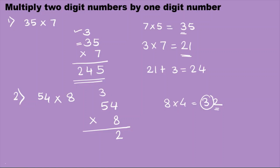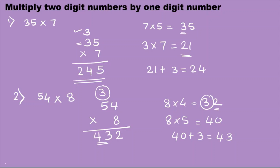Now I start with 8 times 5, which is 40. We can't just put 40 down here because we have to add the carried 3 to 40. So 40 plus 3 equals 43. We write 43 here. So 54 times 8 is 432.